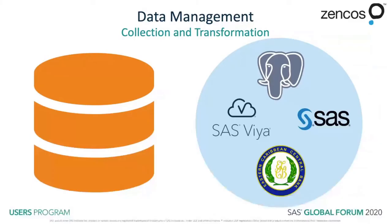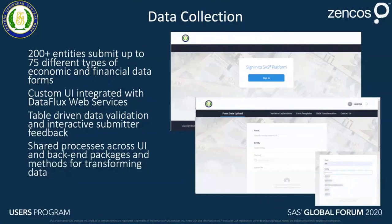So how does data get into the system and how do we ensure it's of high quality prior to entering? We developed a data collection front end through which over 200 entities can submit up to 75 different types of economic and financial data through a secure interface — a custom deployed SAS Viya application written in modern web development technologies. That interface uses web services to communicate between a back-end SAS process and a front-end user interface to ensure submitted data is consistent not only within a form but across forms.